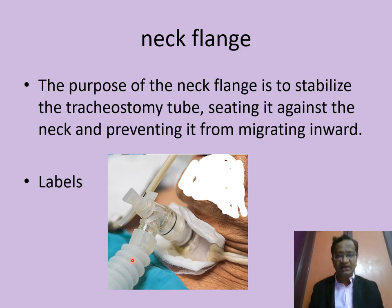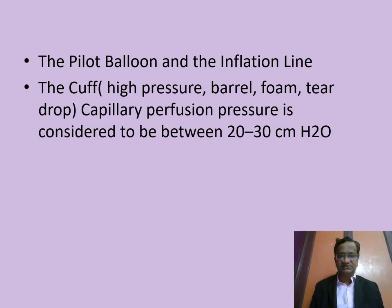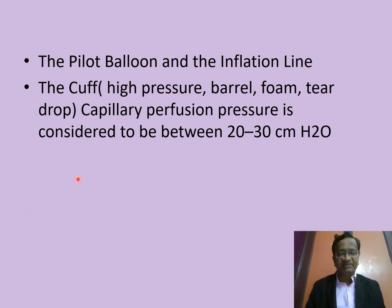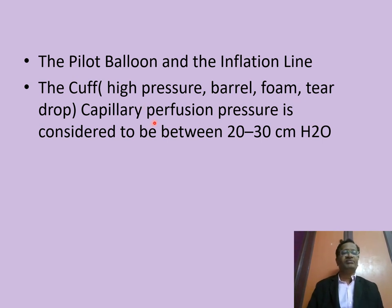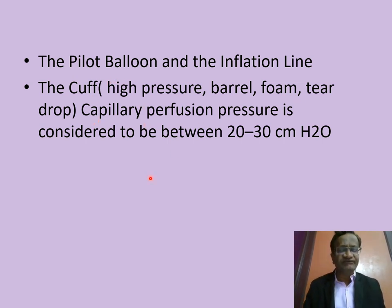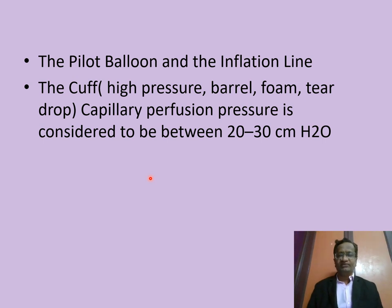The neck flange stabilizes the tracheostomy tube — it goes around the neck held by ties. Regarding cuff inflation: capillary perfusion pressure is between 20 to 30 mmHg. There are high-pressure, barrel, and foam tear-drop cuffs available, but what we use are low-pressure cuffs.